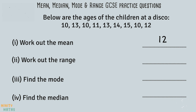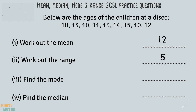To work out the range we need to find the difference between the highest age in the group, which is 15, and the lowest age, which is 10. We take 10 away from 15 and the answer is 5. To find the mode we need to see which age occurs the most in the list. We can see that ages 10 and 13 appear more than once — 10 occurs three times while 13 only appears twice. Therefore 10 is the mode.